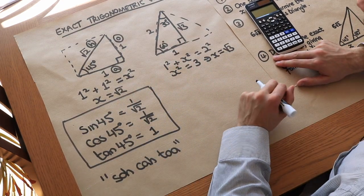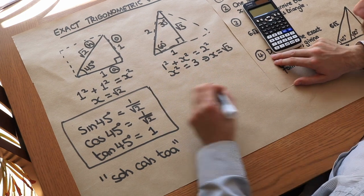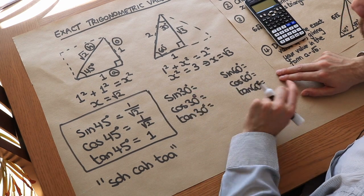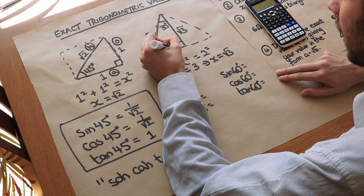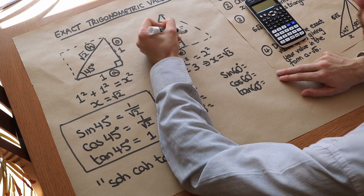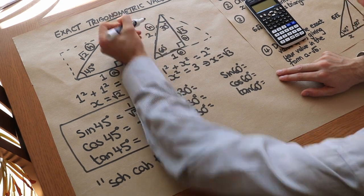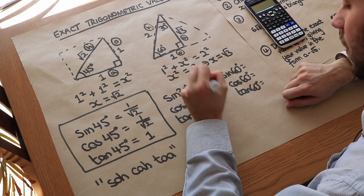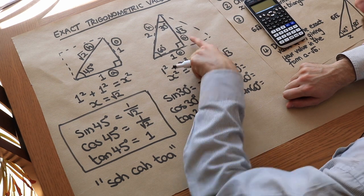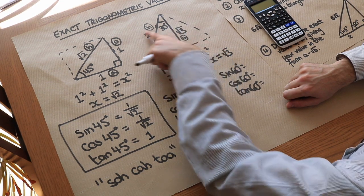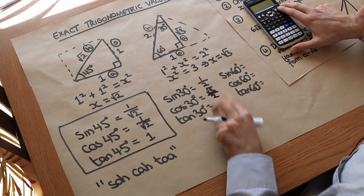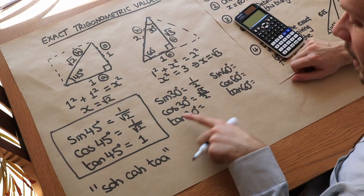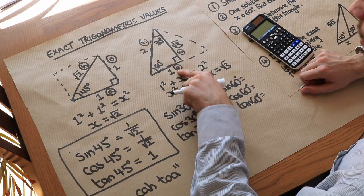We can now find sine of 30, cos of 30, and tan of 30. Using the 30-degree angle: the opposite is 1, the adjacent is √3, and the hypotenuse is 2. So sine of 30 = 1/2, cos of 30 = √3/2, and tan of 30 = 1/√3.